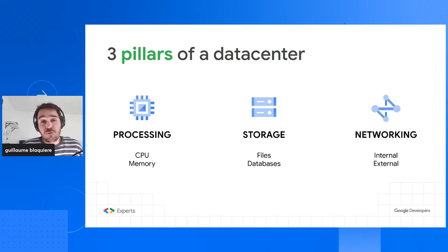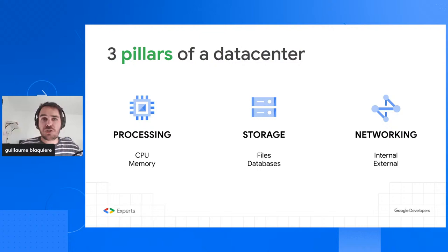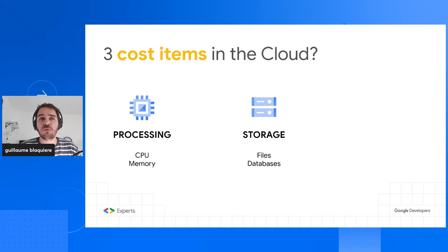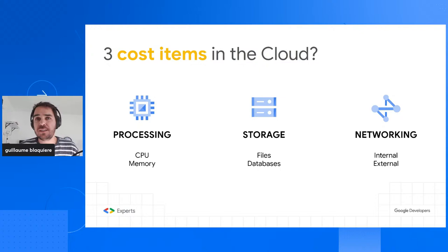Looking at the cloud or even your on-premises data centers, the costs are exactly the same. You pay for processing — the CPU and memory you use. You pay for the storage you use and consume, or what you reserve, because sometimes you reserve an amount of storage and pay for that reservation. And for networking, in the cloud you pay mainly the egress — the traffic going out — but also traffic between regions.